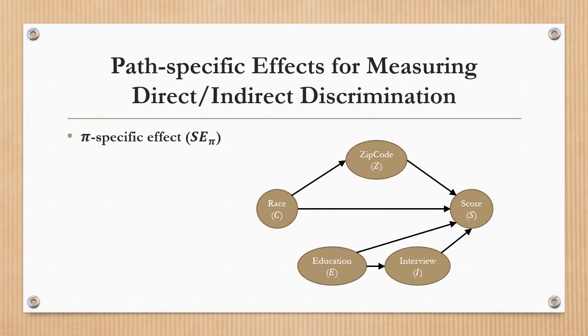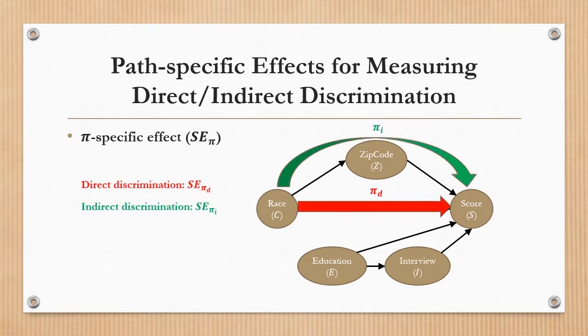The next step is to quantify discrimination. We extend the path-specific effects technique to our mixed variable causal graph. Path-specific effects measure the causal effects that are transmitted along certain paths. By employing this technique, we capture the direct and indirect discrimination as different path-specific effects.